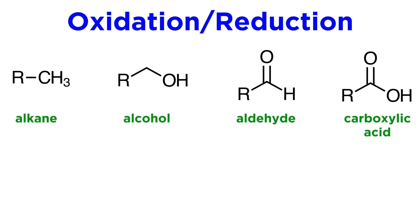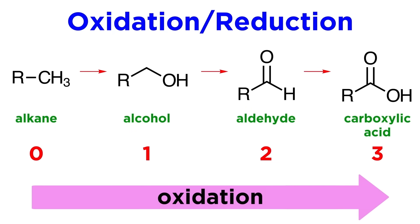Here is a series of functional groups, from alkane to alcohol to aldehyde to carboxylic acid. As we move to the right, going from zero bonds to oxygen, to one, to two, to three, we are performing successive oxidation reactions of one kind or another, and this is represented in a generic way by this letter O in brackets.